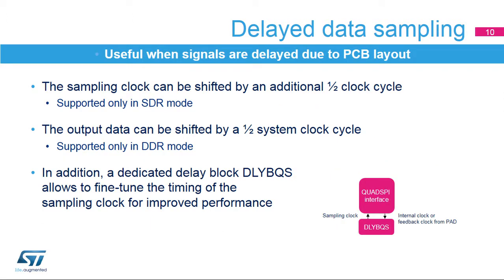Delayed data sampling allows users to compensate for the delay of the signals due to constraints on the PCB layout optimization. It allows applications to shift the data sampling time by an additional one-half clock cycle when operating in SDR mode. In DDR mode, the output data can be shifted by a one-half system clock cycle to relax hold constraints. An additional fine-grained delay can be added to the timing of the sampling clock by enabling the delay block dedicated to Quad SPI.